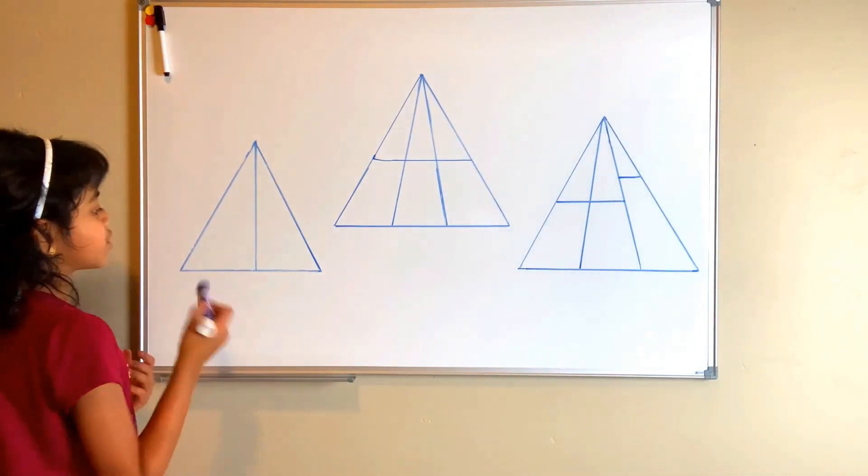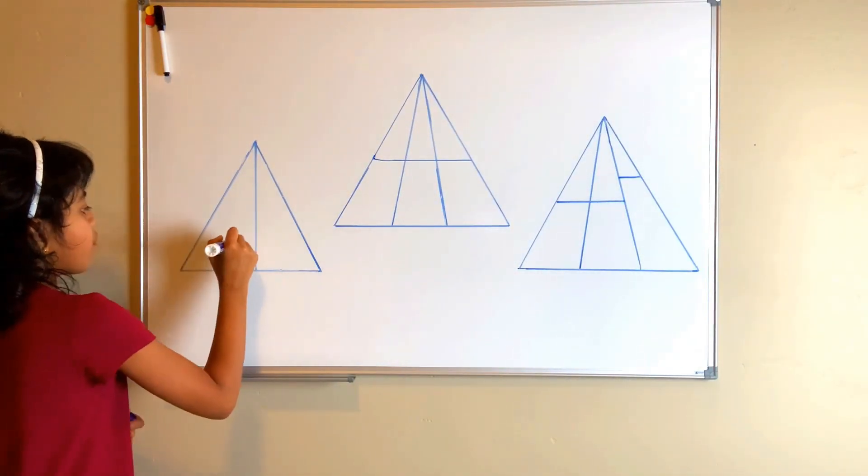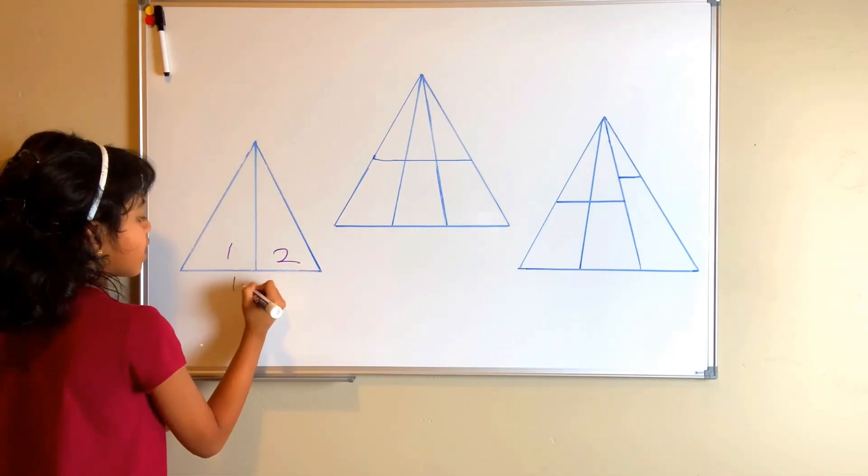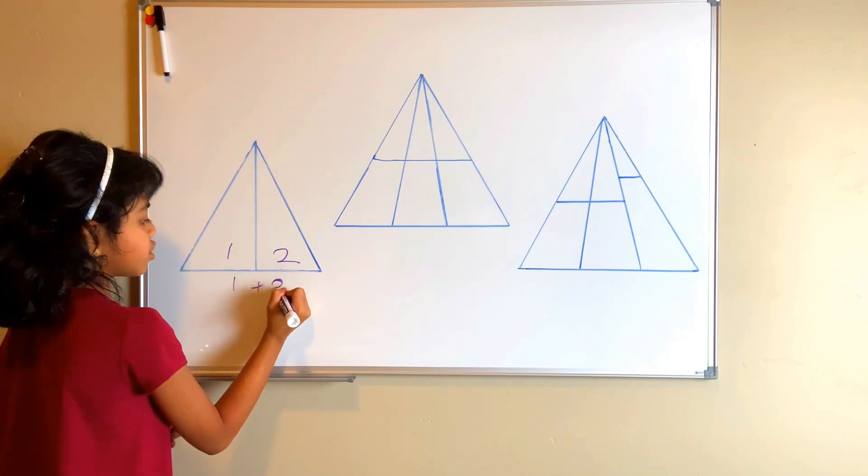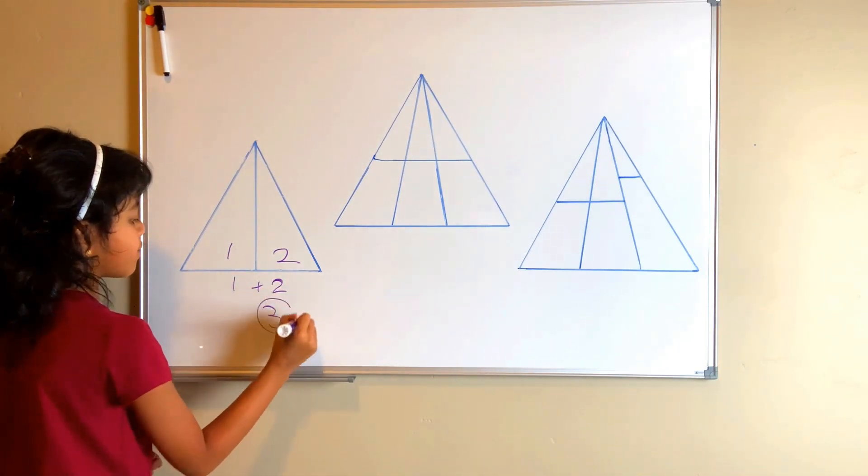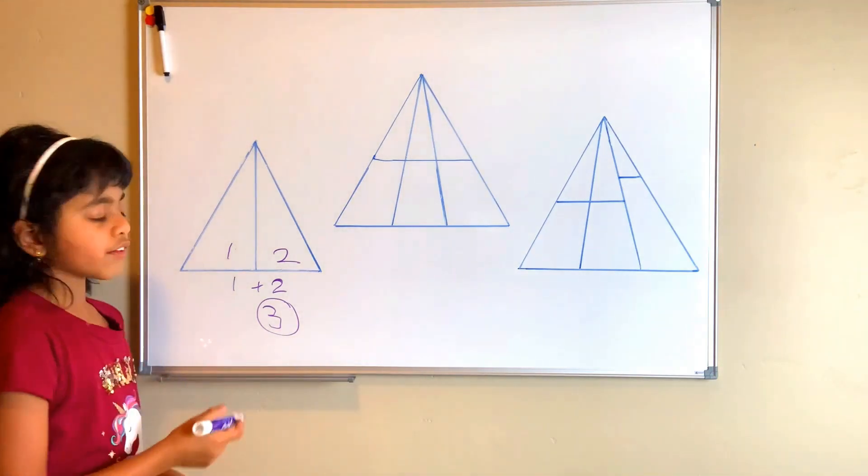The base has two segments. One, two. One plus two equals three. So there are three triangles.